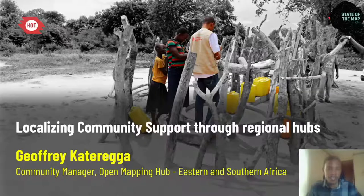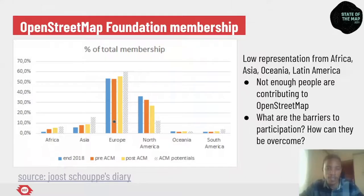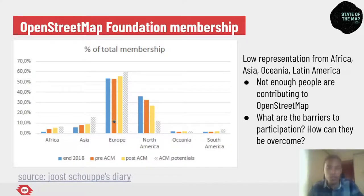Greetings from Kampala. My name is Geoffrey Kateriga from OSM Africa, OSM Uganda, working with the humanitarian OpenStreetMap team as community manager at the Eastern and Southern Africa Open Mapping Hub. Last year the OSM Foundation introduced the active contributor membership, allowing people unable to pay the annual 15-pound fee to become official members and vote in foundation leadership elections.